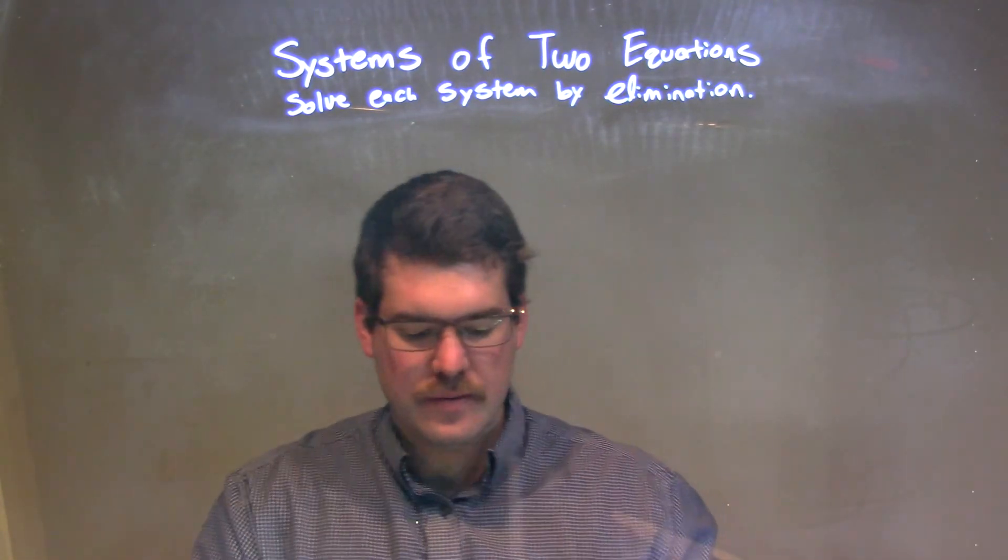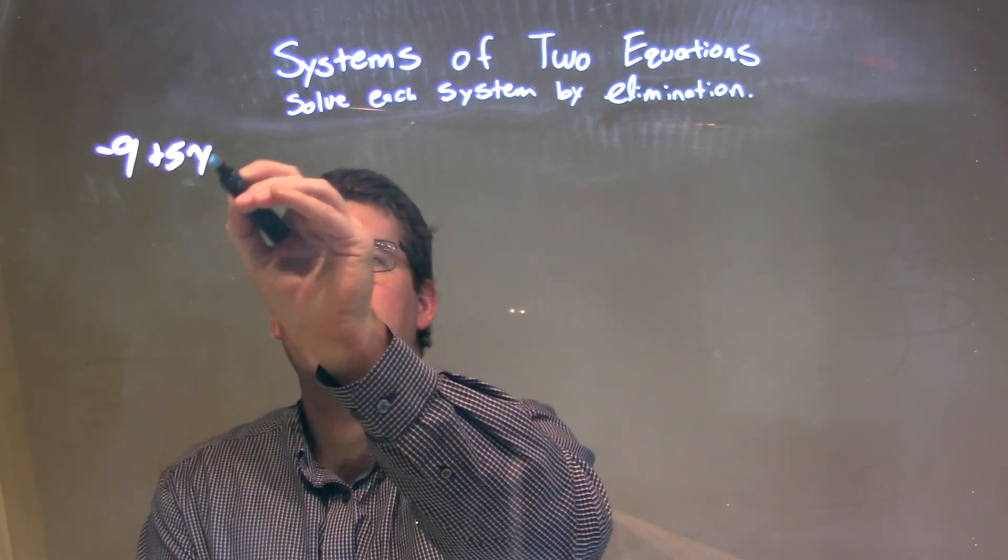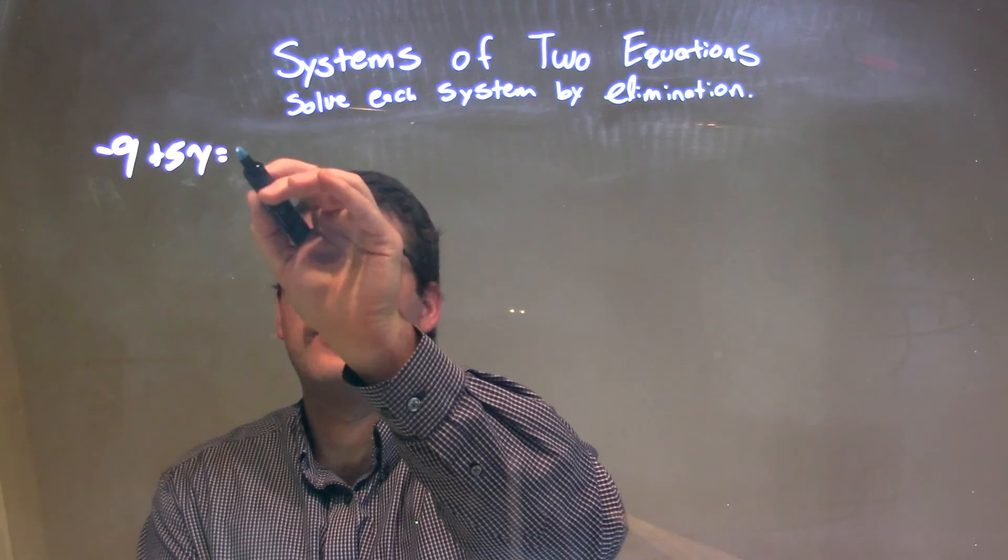If I was given a system, negative 9 plus 5y equals negative 4x,